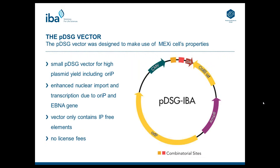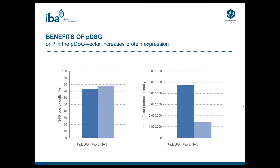Now let's have a look at the vectors. The PDSG vector is a small vector containing a CMV promoter that controls expression of your gene of interest — a powerful promoter especially for transient transfection. It also has an origin of replication for E. coli and an ampicillin resistance gene to propagate the plasmid. Finally, it has an OriP element, which together with the stably expressed Epna gene of the Maxi cells allows episomal replication of your plasmid. Because in transient transfection the plasmid is not incorporated into the chromosome, with every cell division the plasmid is diluted. The OriP slows this dilution and also has an enhancer function for nuclear import of the plasmid and transcription of the gene of interest.